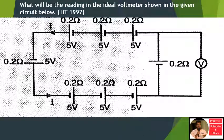What will be the reading in the ideal voltmeter shown in the given circuit below? There are 5 volt cells in series. There are 0.2 ohm resistances and 5 volt cells. There are 8 cells in total.